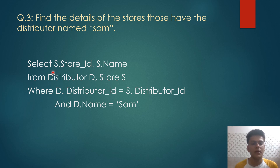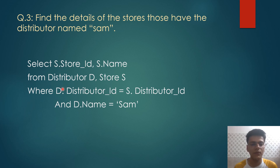The third query is to find the details of the stores that have the distributor named Sam. Here we have joined two tables: select s.store_id, s.name from distributor d, store s where d.distributor_id equals s.distributor_id. Since distributor ID is the same attribute in both tables, we have used aliases d and s to avoid ambiguity, and d.name equals 'Sam'. The resulting output will be our required output.